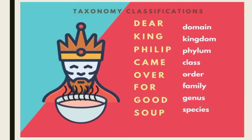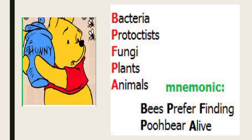In order to learn taxonomic classification, we can remember the sentence: 'Dear King Philip Came Over For Good Soup.' This represents Domain, Kingdom, Phylum, Class, Order, Family, Genus, and Species.